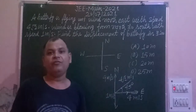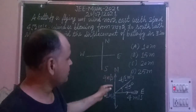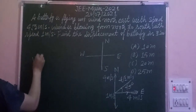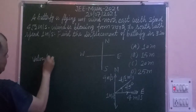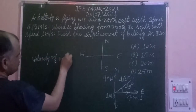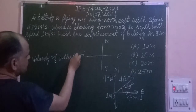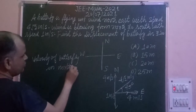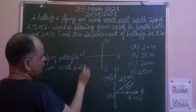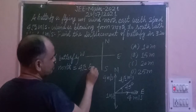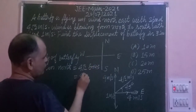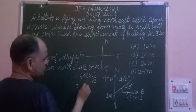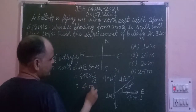So what is the velocity of the butterfly in the North direction? Velocity of butterfly in North equals 4√2 × sin45°. Since sin45° = 1/√2, we get 4√2 × (1/√2) = 4 meters per second.